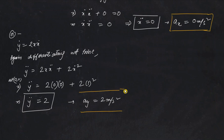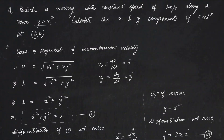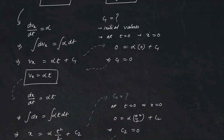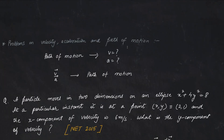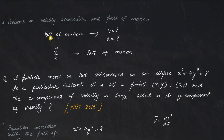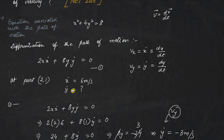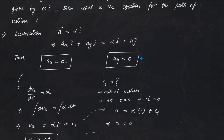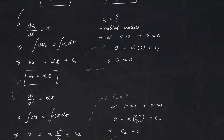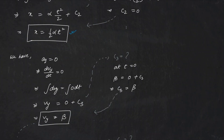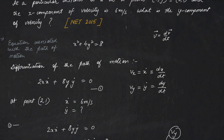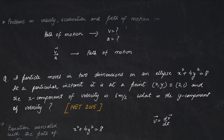In summary, you can get questions in different competitive exams about these two kinds of problems. If given the path of motion, do a differentiation with respect to time to obtain velocity and acceleration components. If given acceleration and velocity components, integrate with respect to time and apply the necessary initial conditions to obtain the equation of motion. That's it for today, thank you very much.